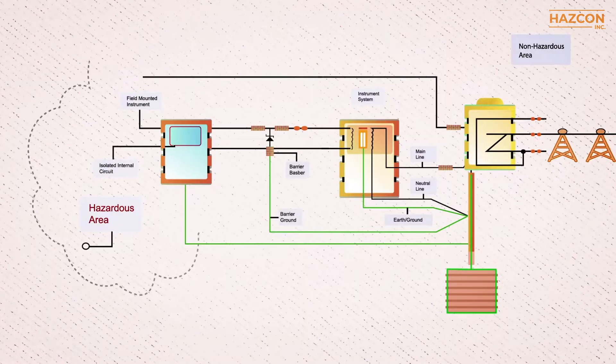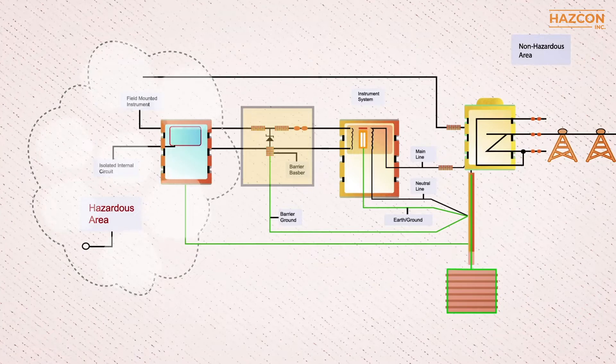As the illustration shows, a Zener barrier is placed on the electric wires between the non-hazardous and hazardous areas of an intrinsically safe system.